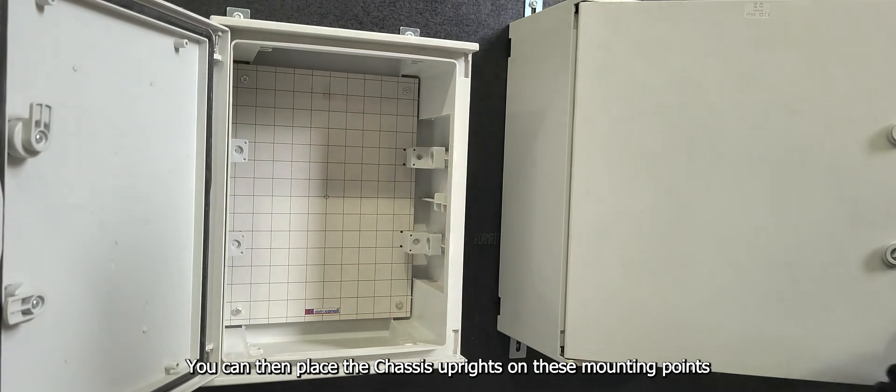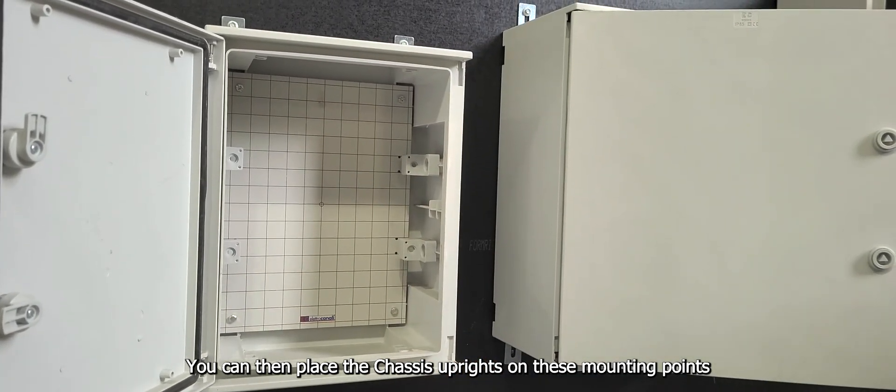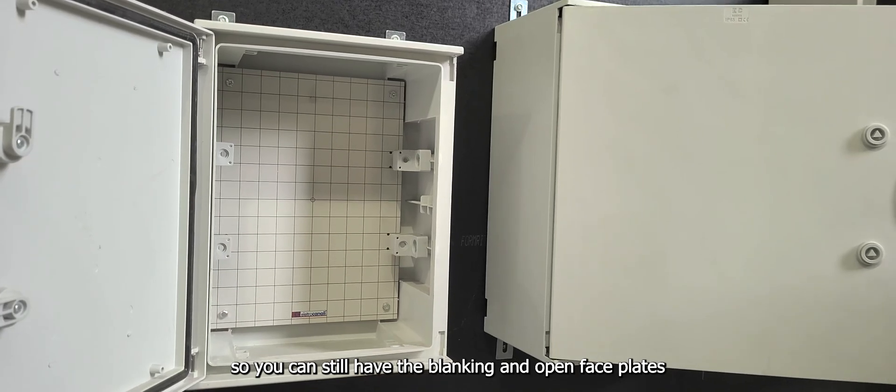You can then put the chassis uprights on these mounting points so you can still have the blanking and open face plates.